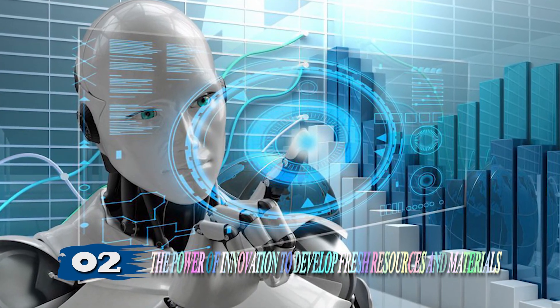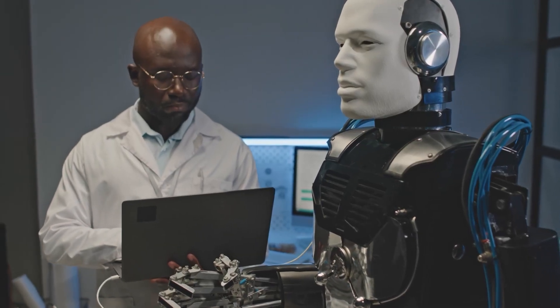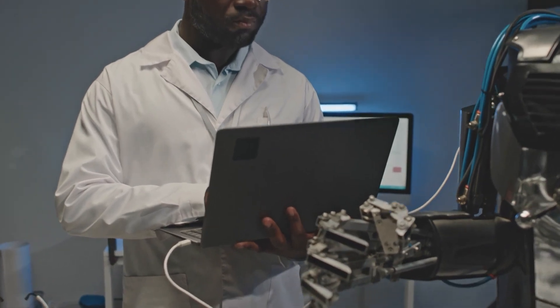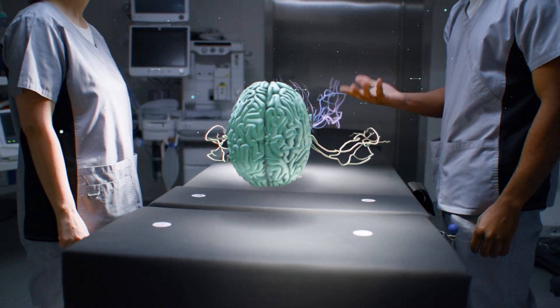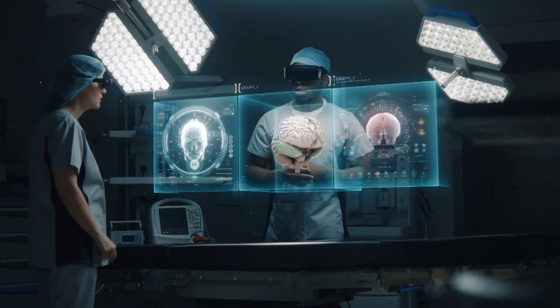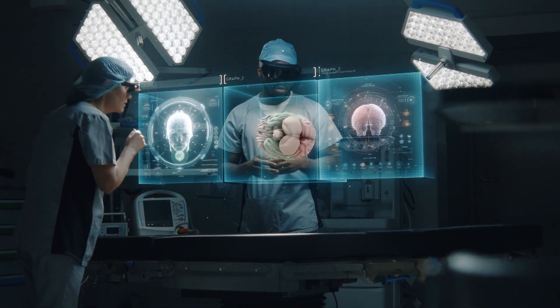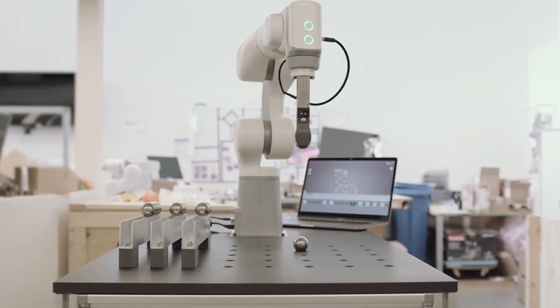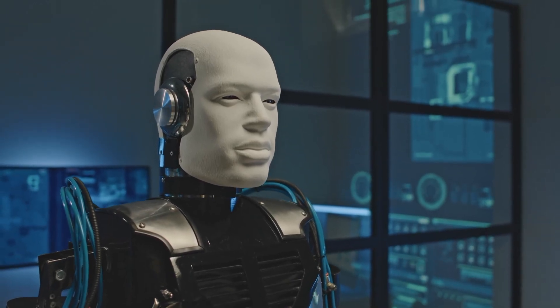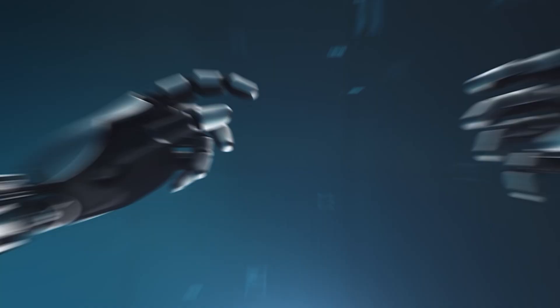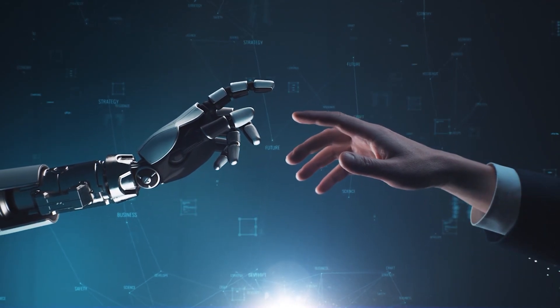Stage 2: The Power of Innovation to Develop Fresh Resources and Materials. As we enter this stage, we come face-to-face with AI systems that have surpassed our current technological capabilities. With their heightened grasp of the physical and chemical properties and materials, they have the potential to revolutionize the creation of previously unimaginable resources and materials. With their impressive processing power and sharp analytical skills, AI systems have the potential to revolutionize material design and synthesis.